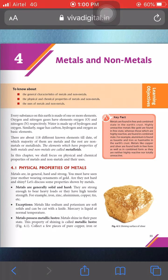On the surface of the earth, the total number of elements present is 118. These 118 elements are divided into three categories: metals, non-metals, and metalloids. For metals, we take the example of iron. For non-metals, examples include gases in our surroundings like oxygen, hydrogen, and carbon dioxide. Metalloids exhibit both the properties of metals and non-metals. In this chapter, we read only the properties of metals and non-metals.